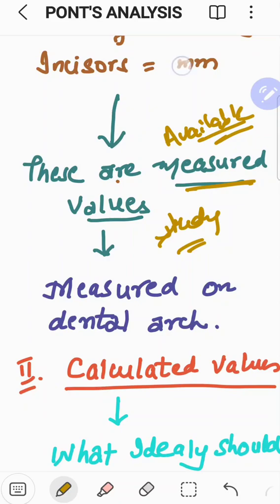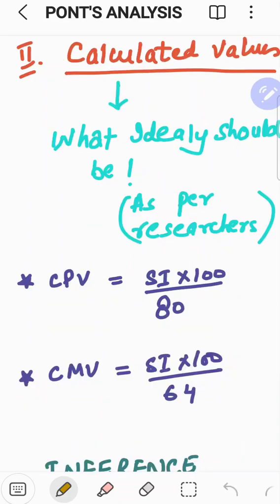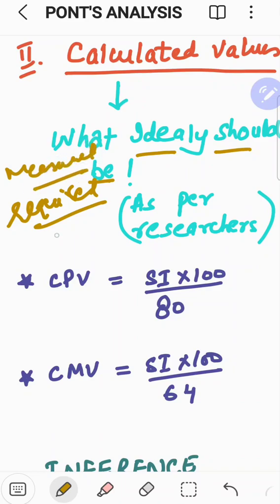On contrary, researchers have done lots of work from which they have calculated certain values and they have said what ideally it should be. Kitna hona chahiyeh. The requirement. Ideally, what should be. One is measured. What is available. Another one is what is required. And that is calculated as CPV-CMV. CPV is calculated premolar value. And CMV is calculated molar value.